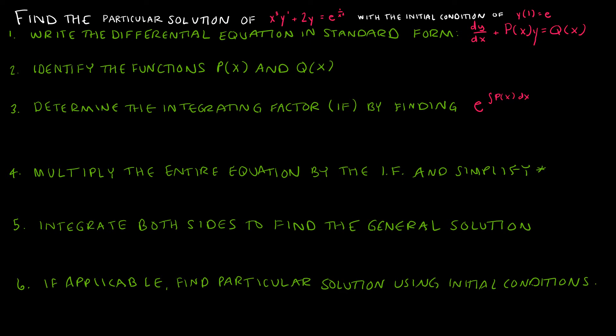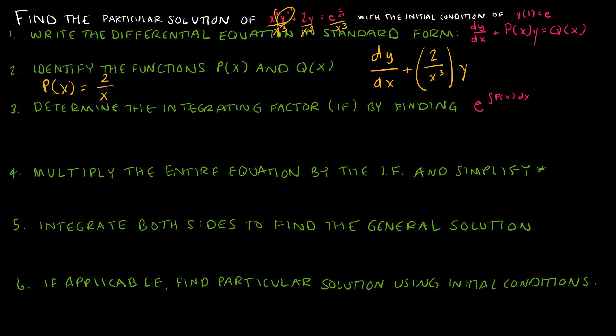In this next question, we're going to take it one step further to find the particular solution, and they've given us an initial condition. Step one is to write the differential equation in standard form. In this case, there's an x cubed coefficient, so I divide everything by x cubed. The new standard form equation is dy/dx plus 2/x cubed times y equals e to the 1/x squared divided by x cubed. We write it that way to make clear that p(x) is 2/x cubed.